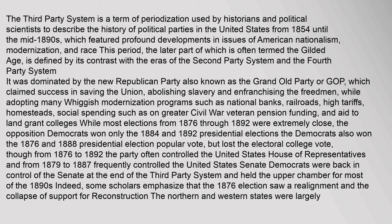While most elections from 1876 through 1892 were extremely close, the opposition Democrats won only the 1884 and 1892 presidential elections. The Democrats also won the 1876 and 1888 presidential election popular vote, but lost the electoral college vote, though from 1876 to 1892 the party often controlled the United States House of Representatives, and from 1879 to 1887 frequently controlled the United States Senate.